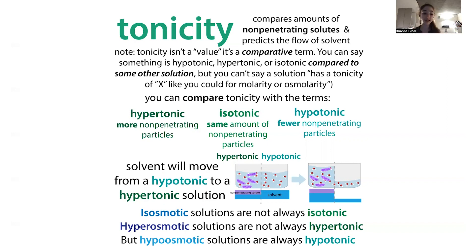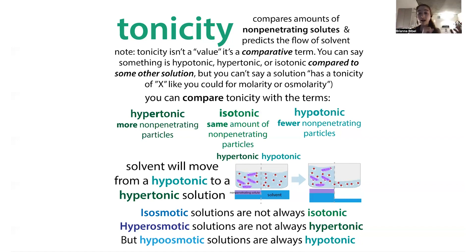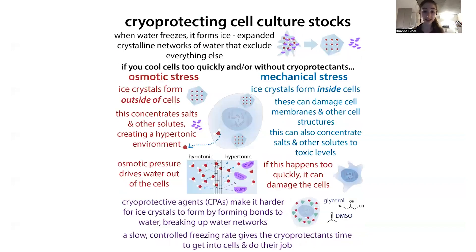Water then has a lower effective concentration outside — it's like there's less available water out there because it's been taken out of commission as ice. This drives the water inside the cell to move out, because before you had water moving back and forth, but now the water frozen outside can't come back in. The water keeps going out, and you get a net result where water is driven out from the hypotonic inside to the hypertonic outside of the cell. This dehydrates the cells. If this dehydration happens too quickly, you can damage the cells — you don't want them to just shrivel up and die.